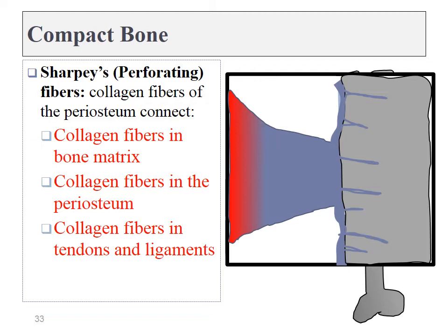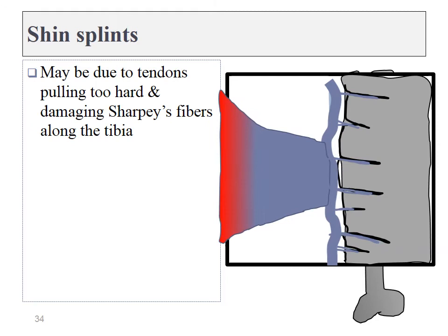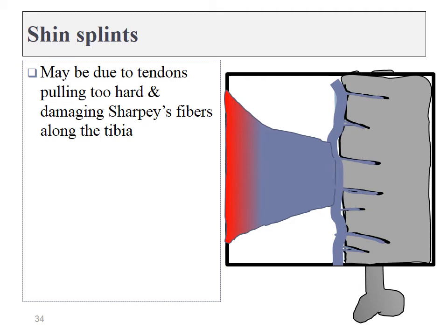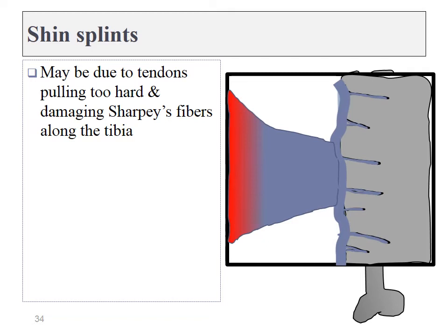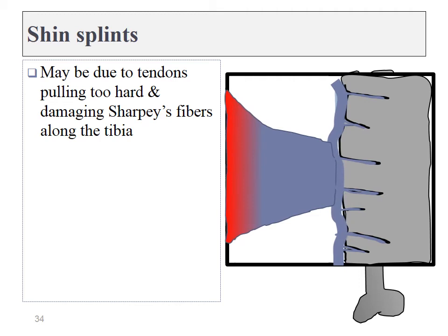The force that a muscle generates is not applied in just one area, but over a very broad surface, making for a very strong connection. If you've ever tried to remove all of the meat off a bone, you find it's very difficult — there's really no end to the meat and beginning to the bone; all of this material blends into one another. Shin splints are possibly damage to these Sharpey's fibers. When muscles pull on bone tissue too strongly, that can pull some of these fibers out of position, causing inflammation and the pain we call shin splints. These are very difficult to heal because it's very difficult to take pressure off our shins.